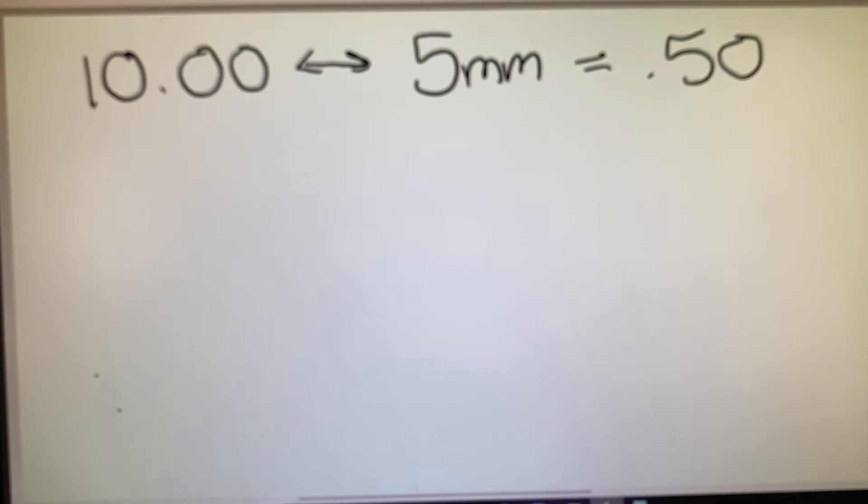So 10 diopters moved 5 millimeters changes by a half. Now, the more important thing is to understand whether they're asking us what happened, so how much did the prescription change, or how do we fix it?